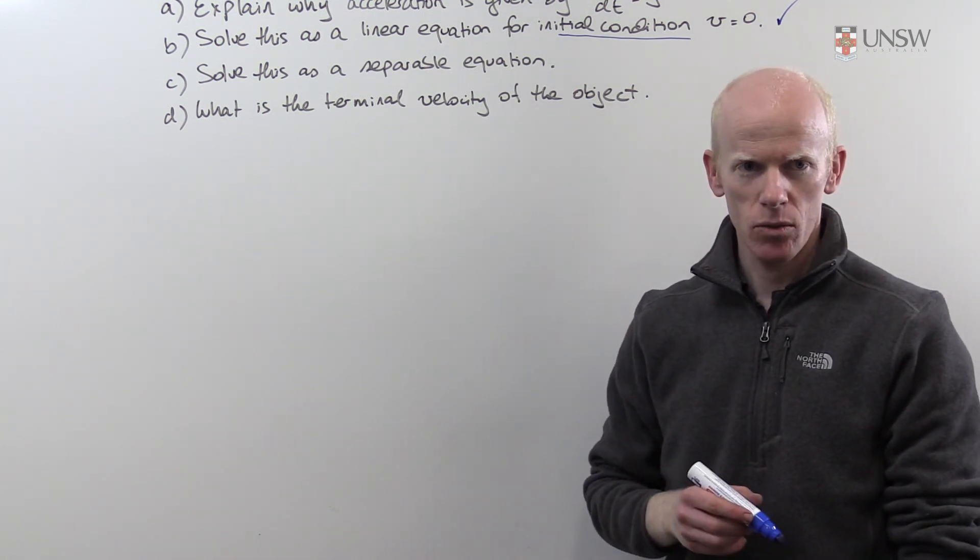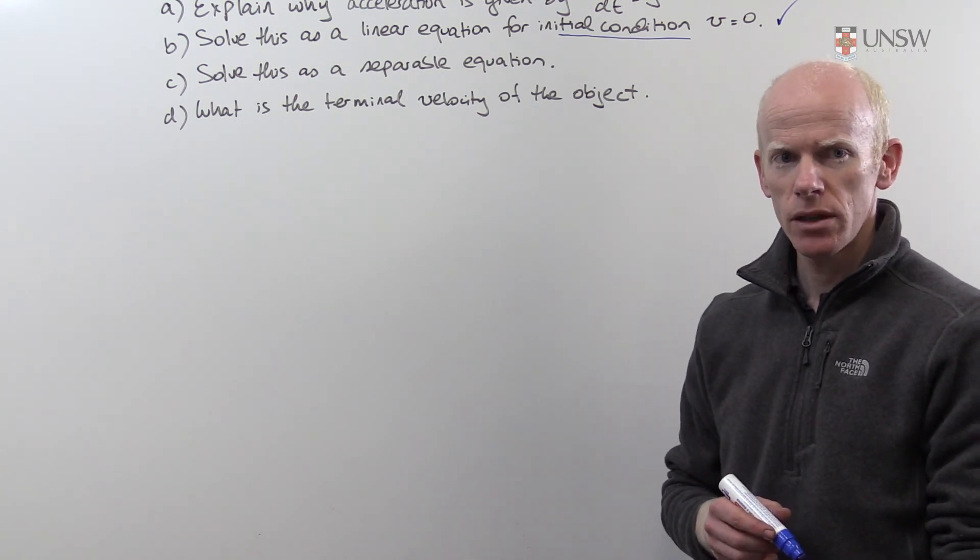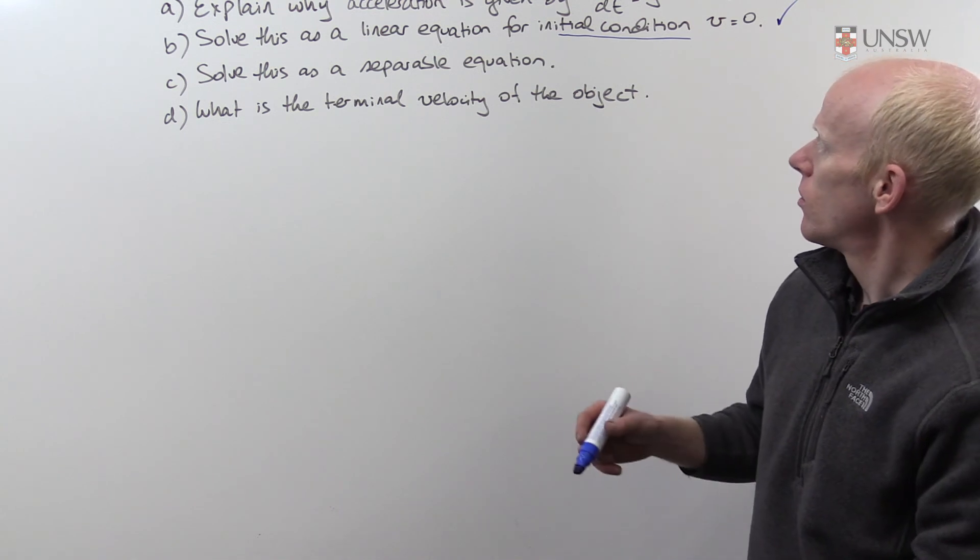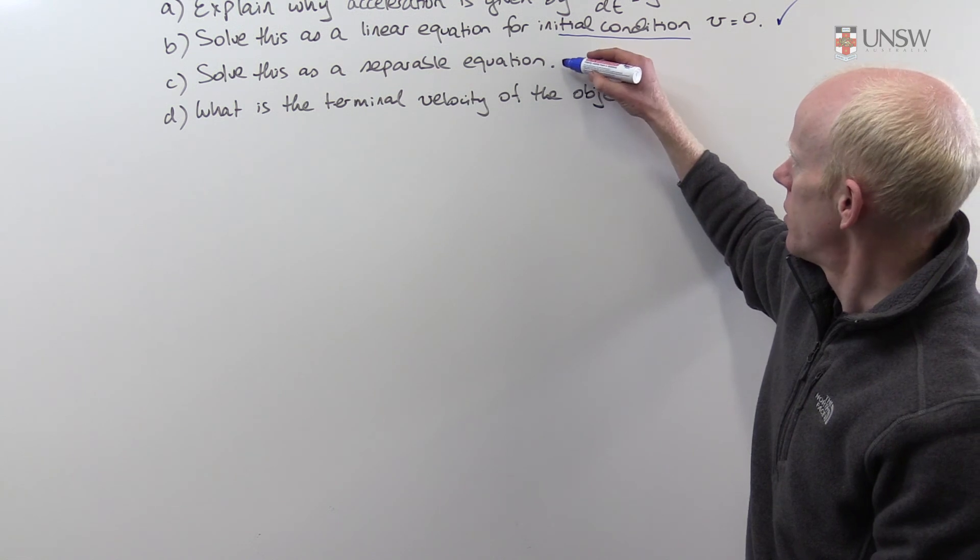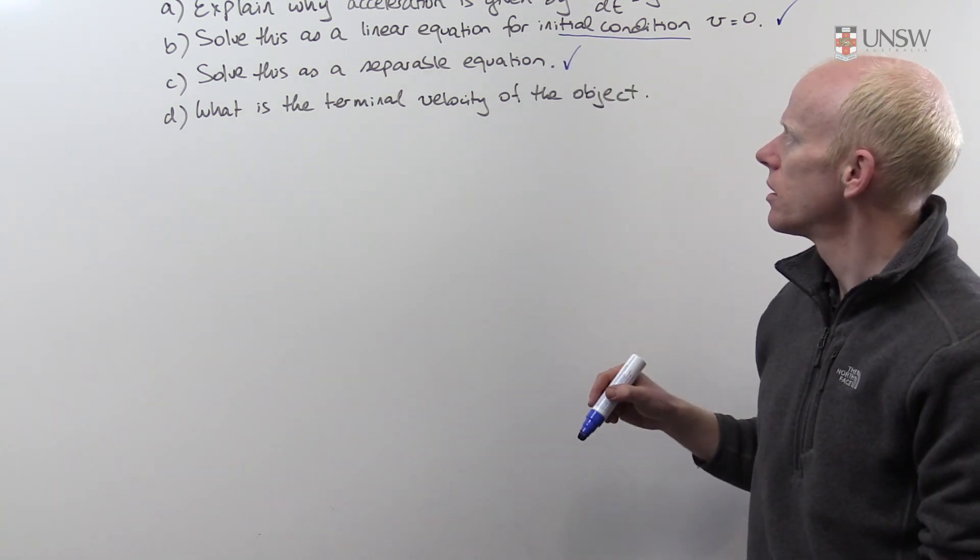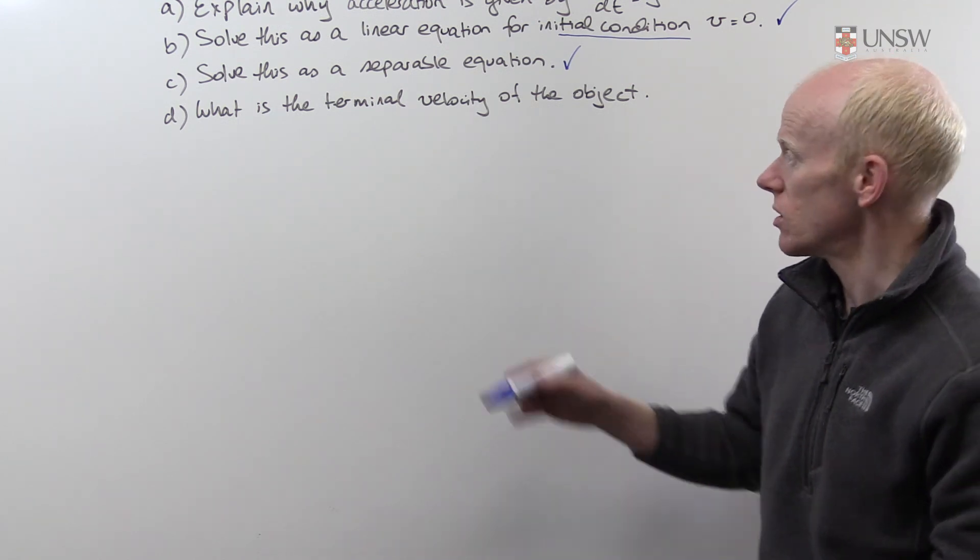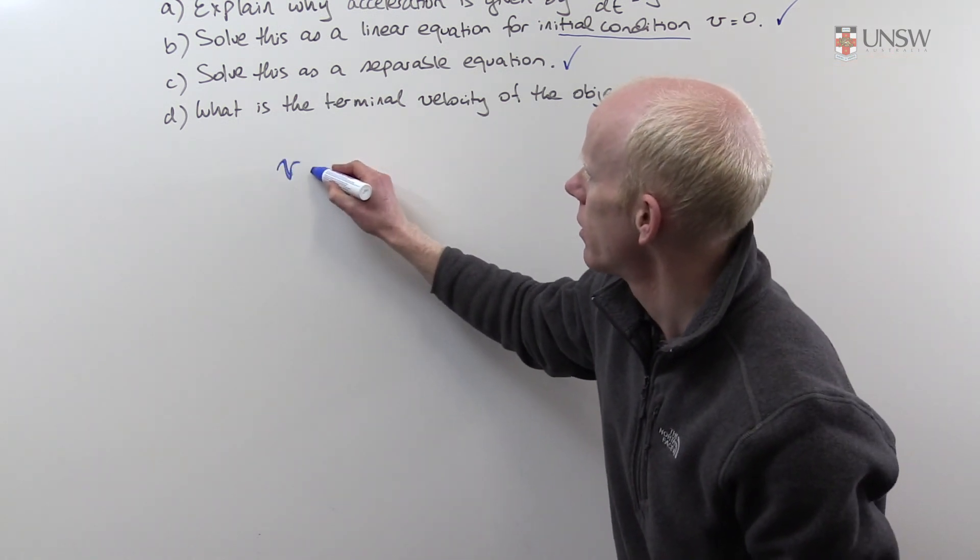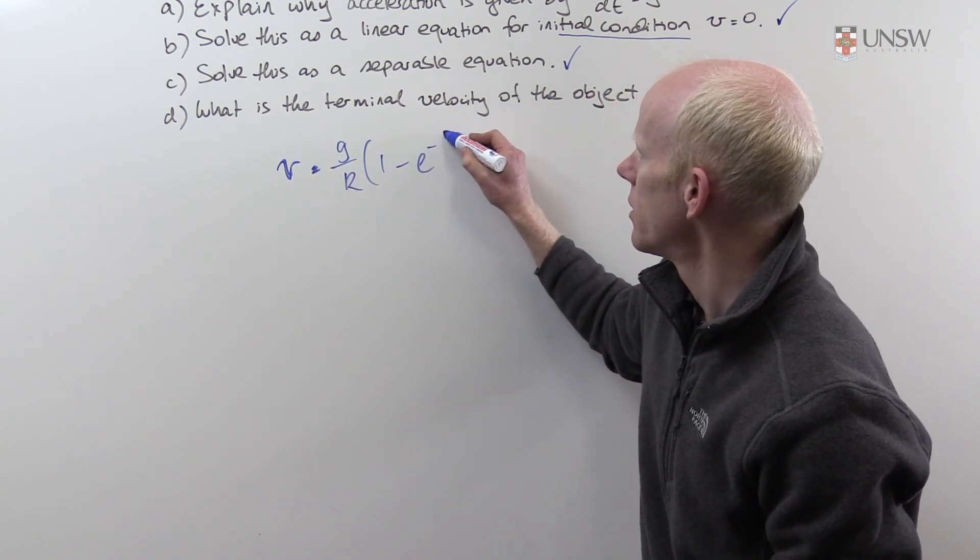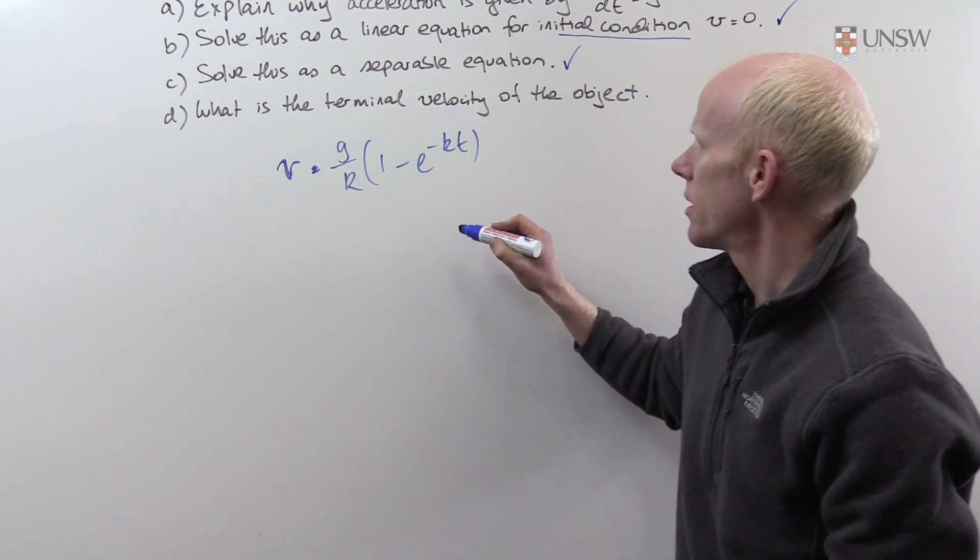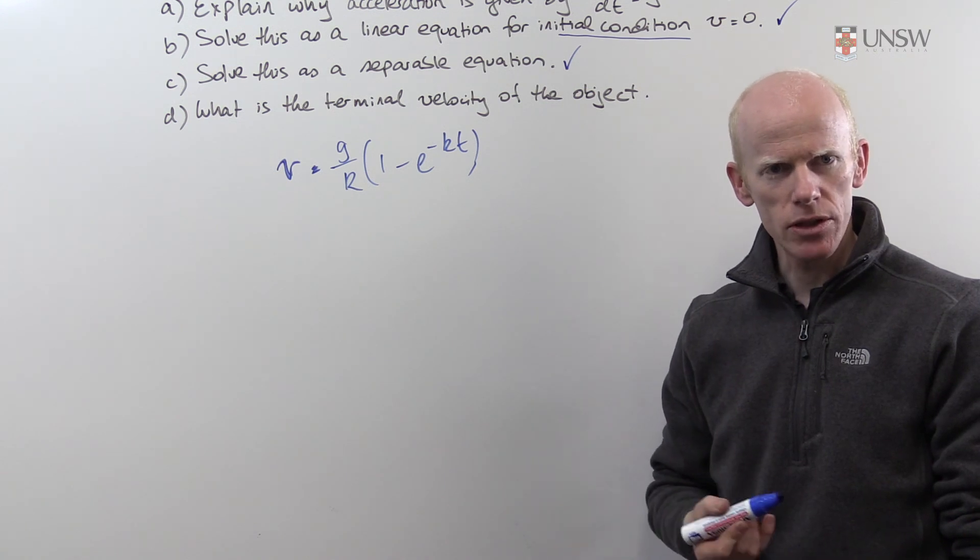For part d, we are asked to find the terminal or limiting velocity of the object. Just to recap, we've solved the linear equation and the separable equation, dv/dt equals g minus kv, and we've achieved a solution that v equals g/k times (1 minus e to the minus kt).